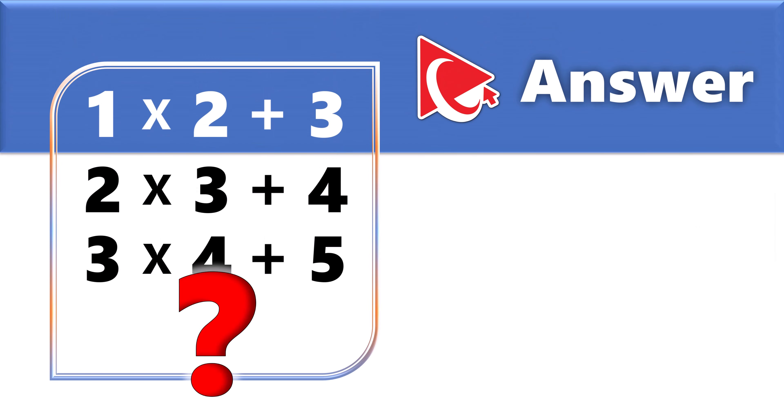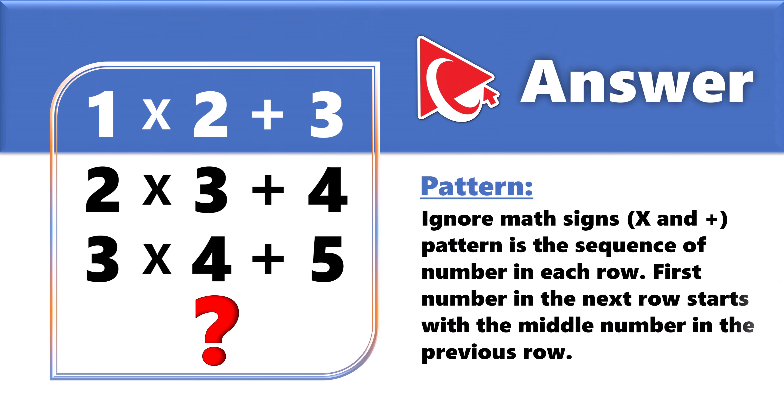The way I see the answer is that we need to ignore the math signs, multiplication and plus signs, and focus on the numbers themselves. Because the pattern here is actually the sequence of numbers in each row. For example, let's take a look at row 1. The numbers are 1, 2, 3.